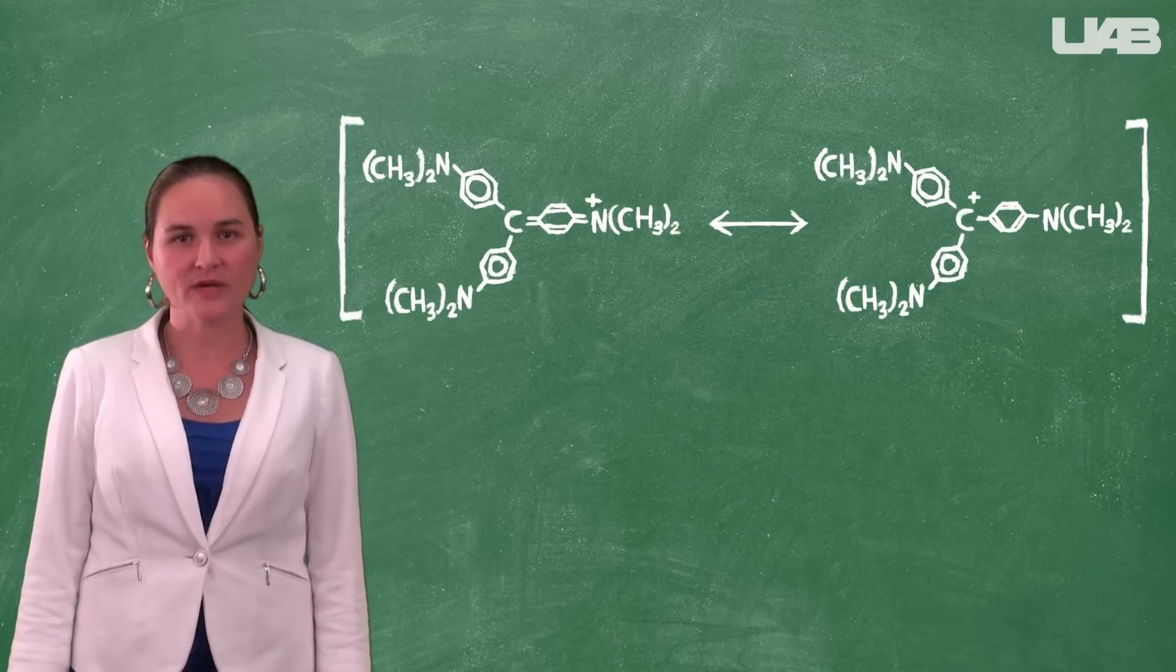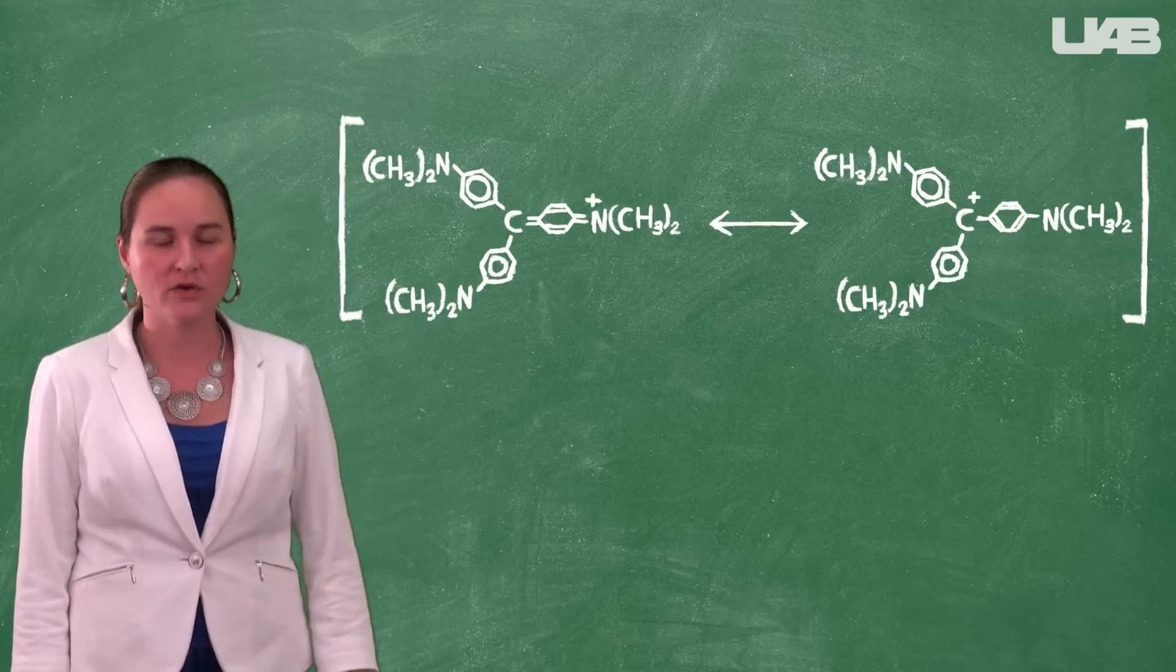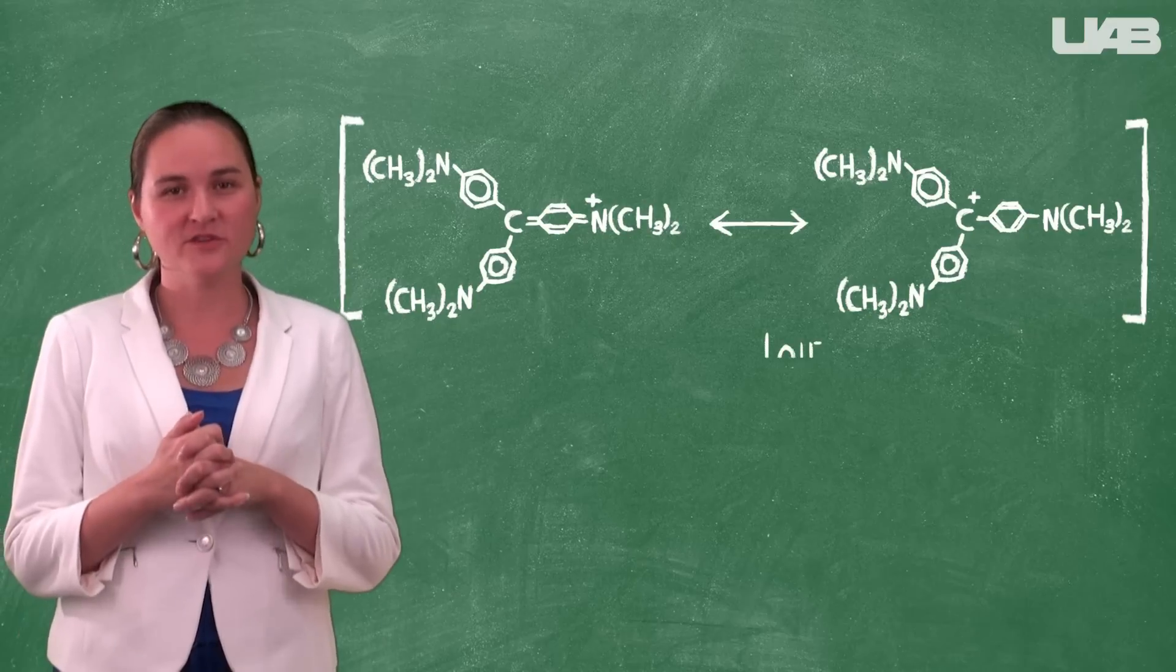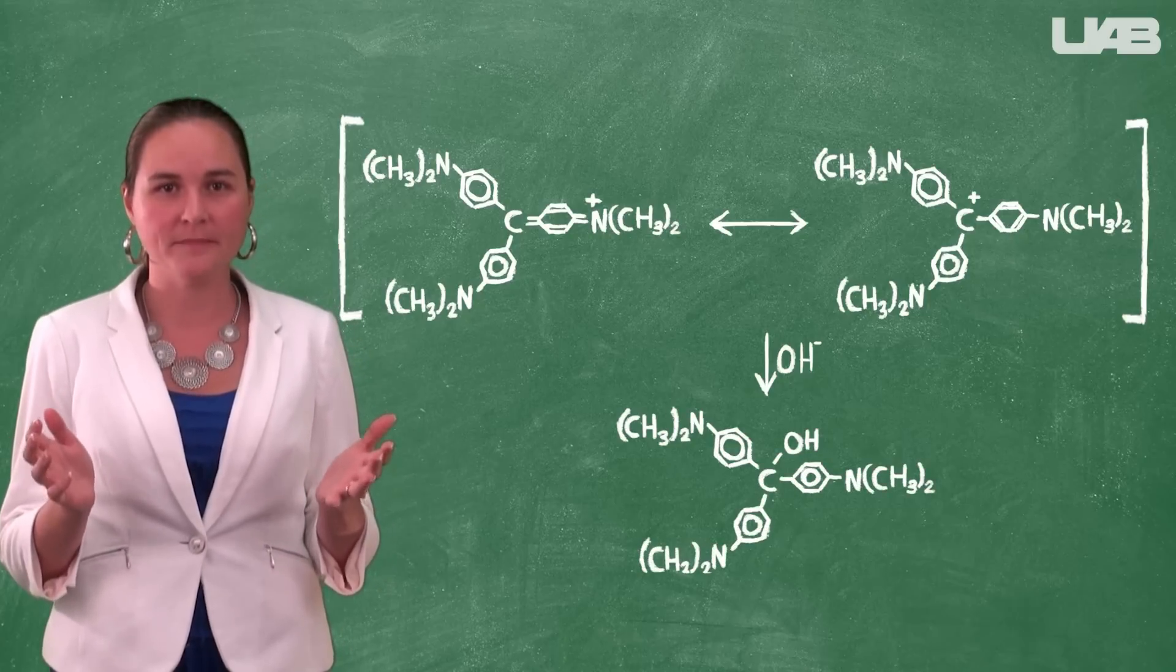Crystal violet is an organic compound that dissolves in aqueous solution to produce a cation and a chloride anion. This cation has a deep violet color. If you add sodium hydroxide to the solution, the hydroxide reacts with the cation to form a colorless carbonyl base.